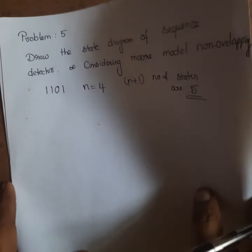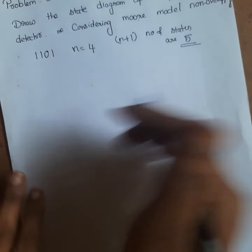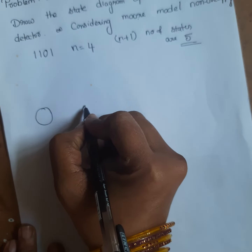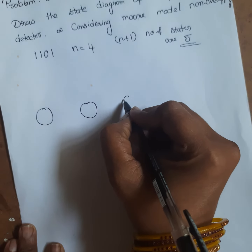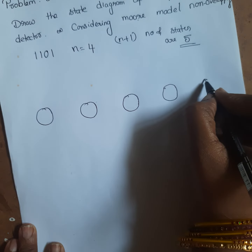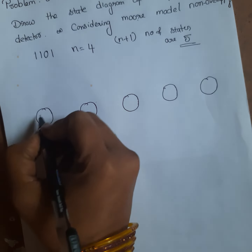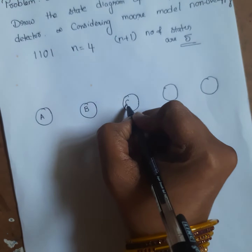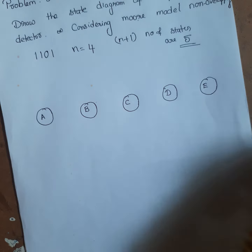First, draw the 5 states: 1, 2, 3, 4, 5. Label them as A, B, C, D, and E.